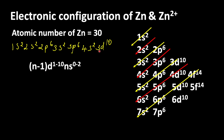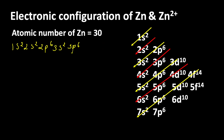We are going to write the 3d orbital first, then after that the 4s orbital. So after 3p6, we write 3d10, and then 4s2. This is the correct electronic configuration of zinc.